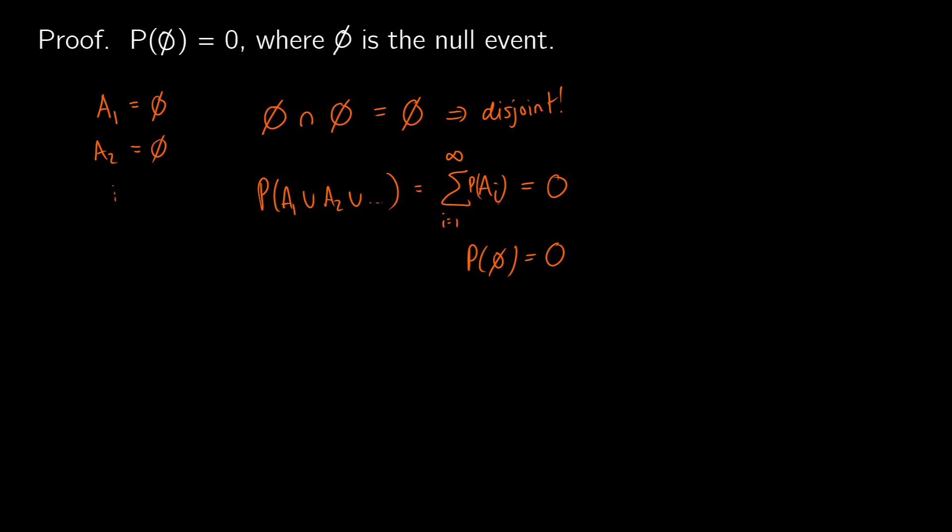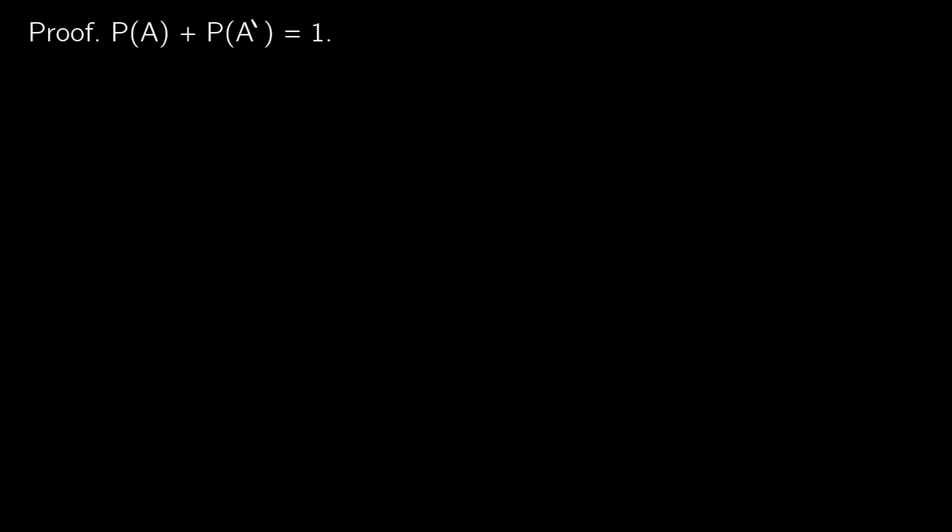So whenever we're talking about the probability of having no event at all, that should be zero. The second thing we can prove is that the probability of event A occurring plus the probability of not A occurring is equal to one — which we can see from a diagram showing A and A-bar covering the entire sample space.